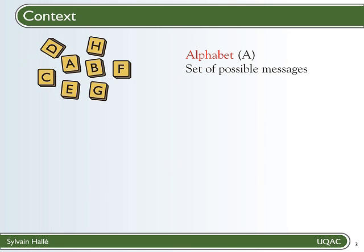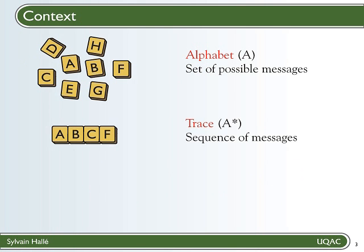So here, just for fun, I represent them as Scrabble letters. A trace or message trace is simply a sequence of such messages. So suppose you define some kind of protocol using, say, a finite state machine, then most probably a lot of different traces will lead you to the same state of this machine.